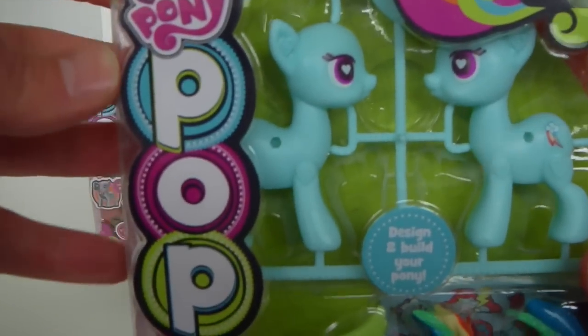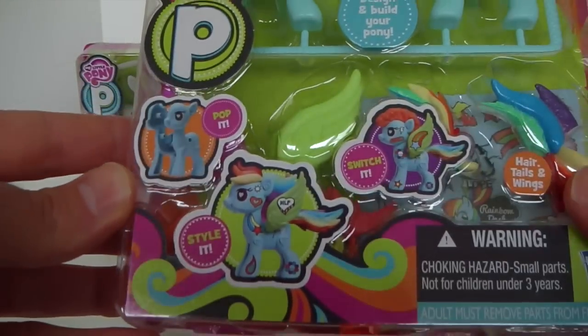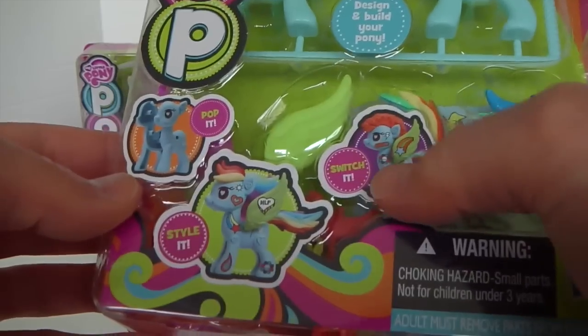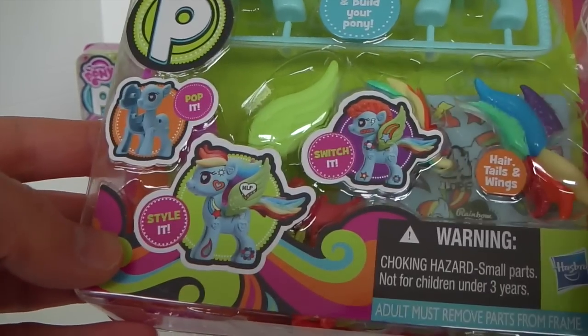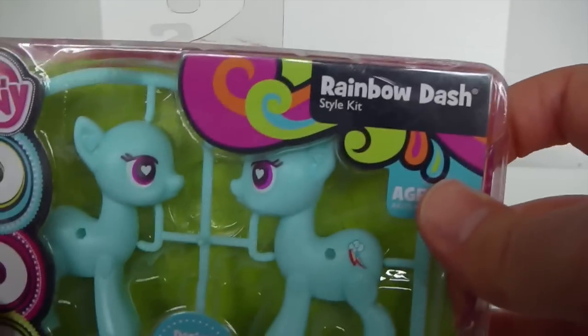And this is the packet and it says My Little Pony and down the side there it says Pop. And just under that it says Pop It, Switch It and Style It. And at the top there it says Rainbow Dash Style Kit.